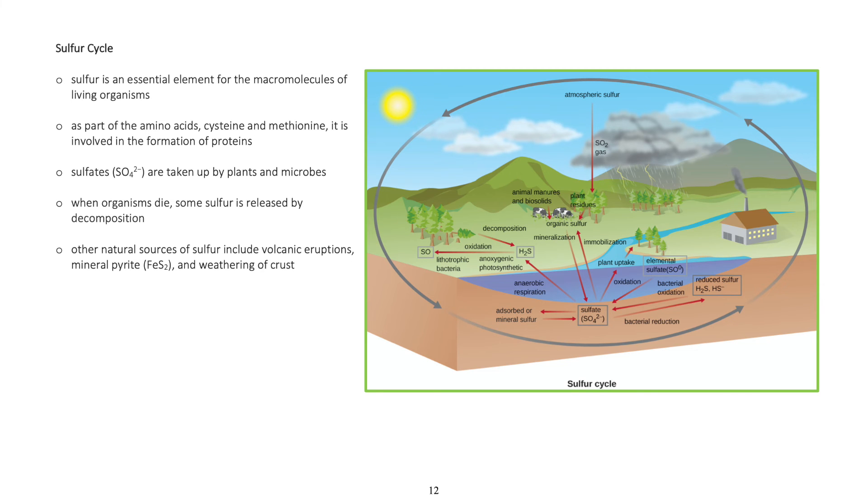Sulfur cycle: Sulfur is an essential element for the macromolecules of living organisms. As part of the amino acids cysteine and methionine, it is involved in the formation of proteins.